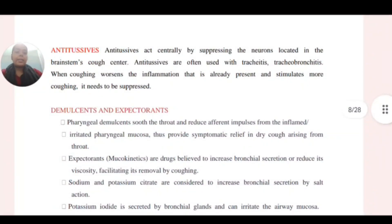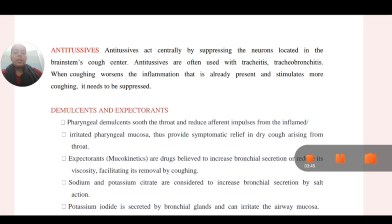Antitussives act centrally by suppressing the neurons located in the brainstem's cough center. Antitussives are often used with tracheitis and tracheobronchitis, and when coughing worsens inflammation that is already present and stimulates more coughing, it needs to be suppressed. Antitussives basically act centrally and work by blocking messages in the brainstem's cough center.